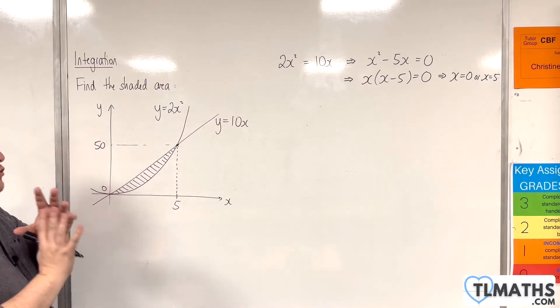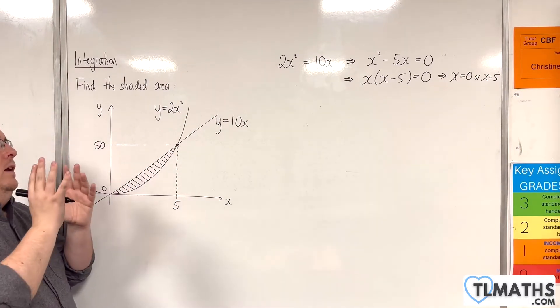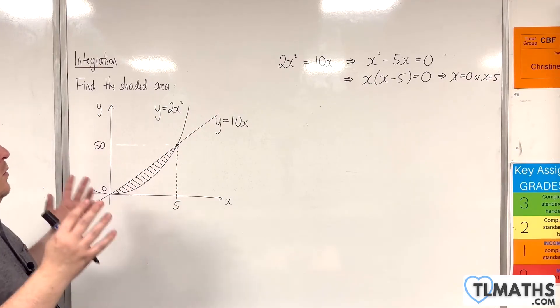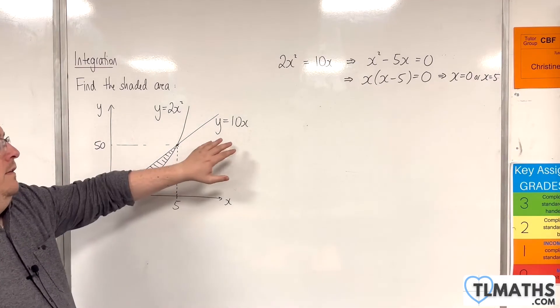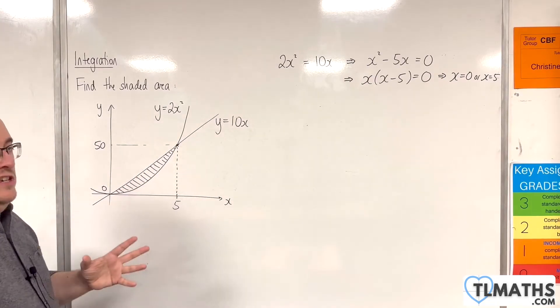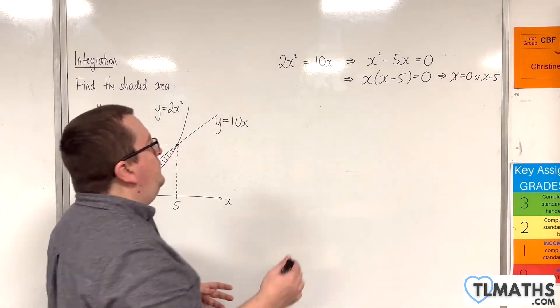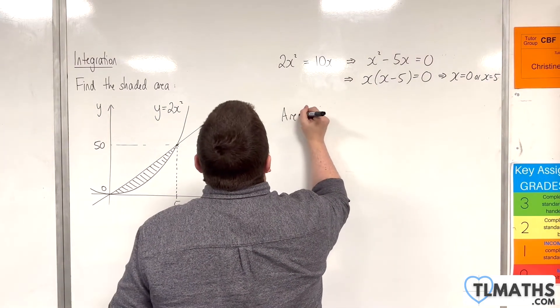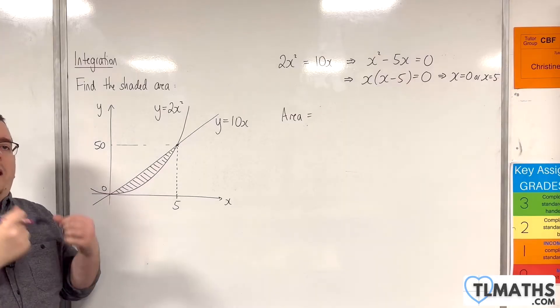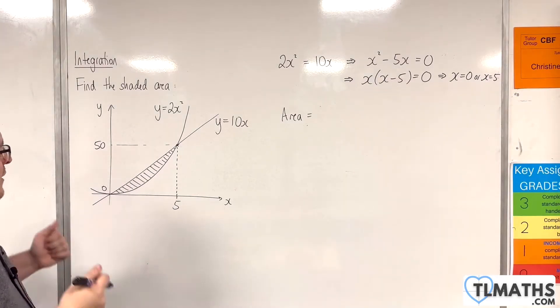Now you can work out the area of the triangle in two ways. Either you do half base times height, which is going to be the easier way. Or you can integrate the line between 0 and 5. That will give you precisely the same result. But for these types of problems, you should be looking out for triangles, rectangles, and then utilising that. It's a lot quicker.